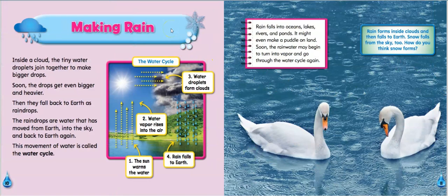Making rain. Inside a cloud, the tiny water droplets join together to make bigger drops. Soon the drops get even bigger and heavier. Then they fall back to Earth as raindrops. The raindrops are water that has moved from Earth into the sky and back to Earth again. This movement of water is called the water cycle.